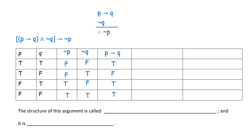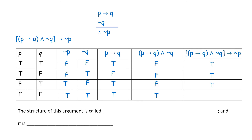Now we compute the conjunction (P → Q) ∧ ¬Q: true ∧ false = false; false ∧ true = false; true ∧ false = false; true ∧ true = true. That column is the big 'if.' Then we evaluate [(P → Q) ∧ ¬Q] → ¬P: false → false = true; false → false = true; false → true = true; true → true = true.